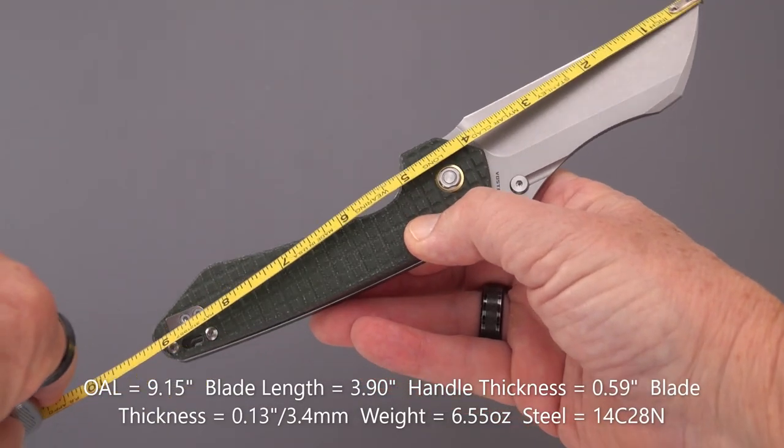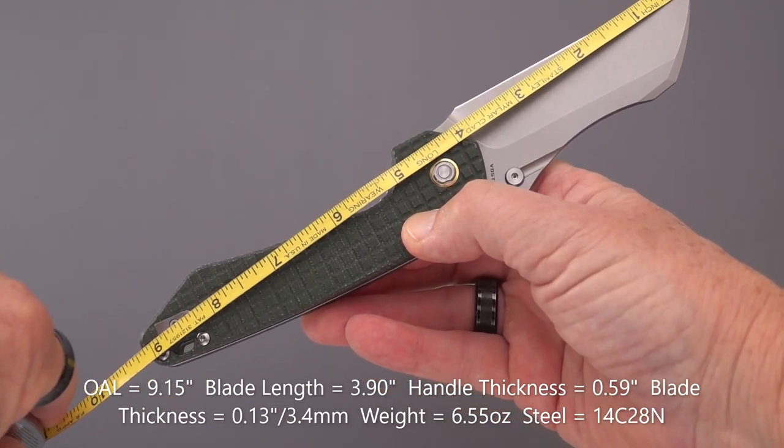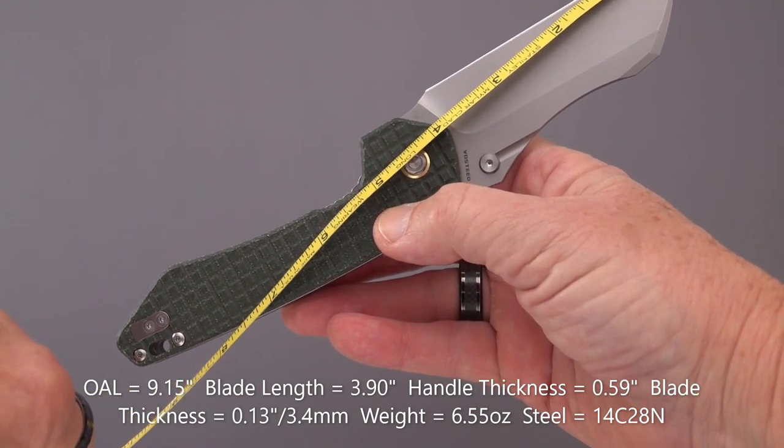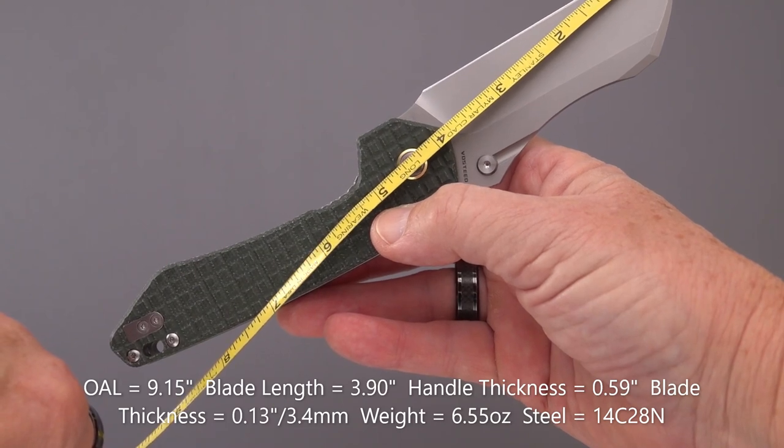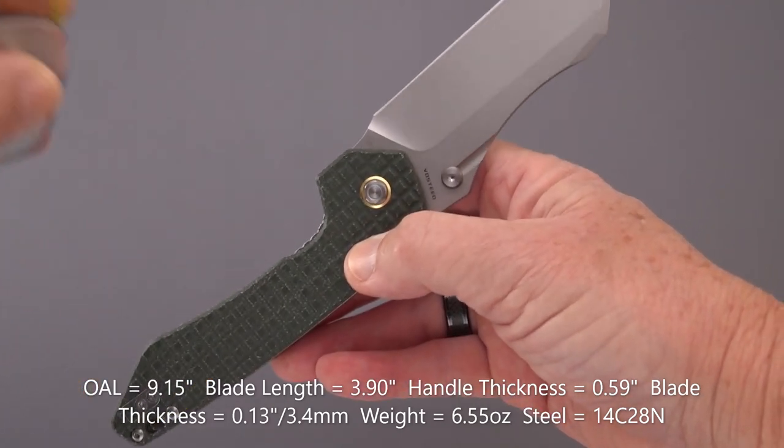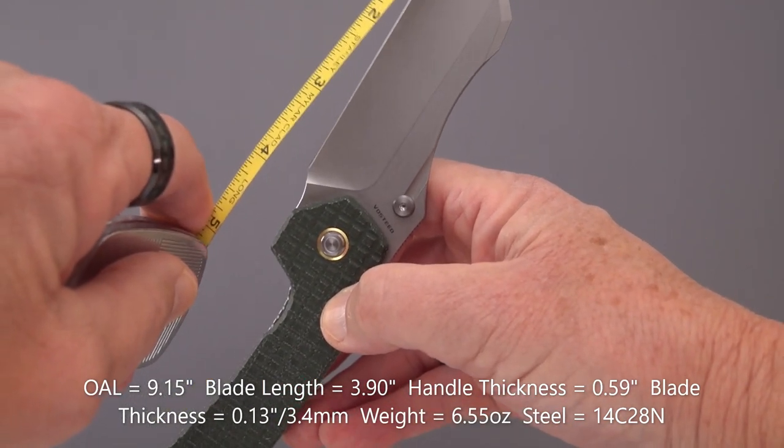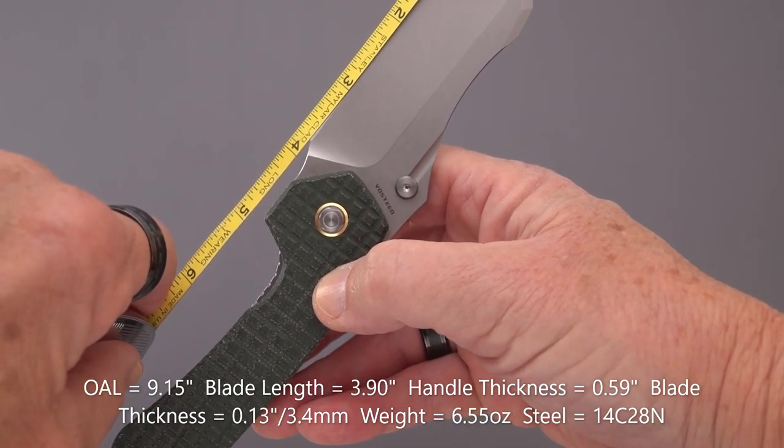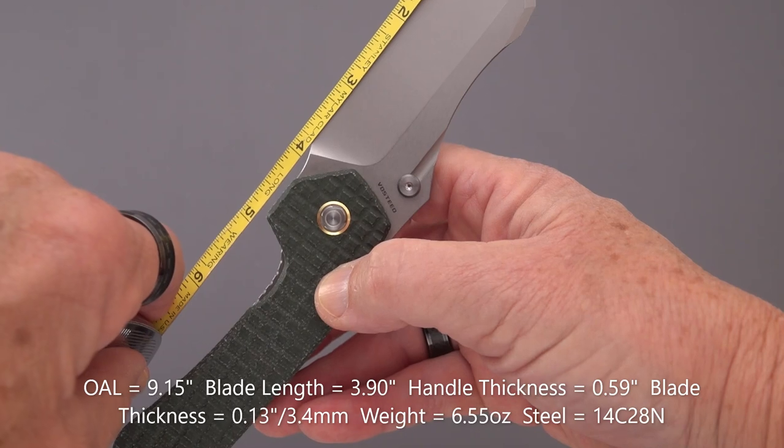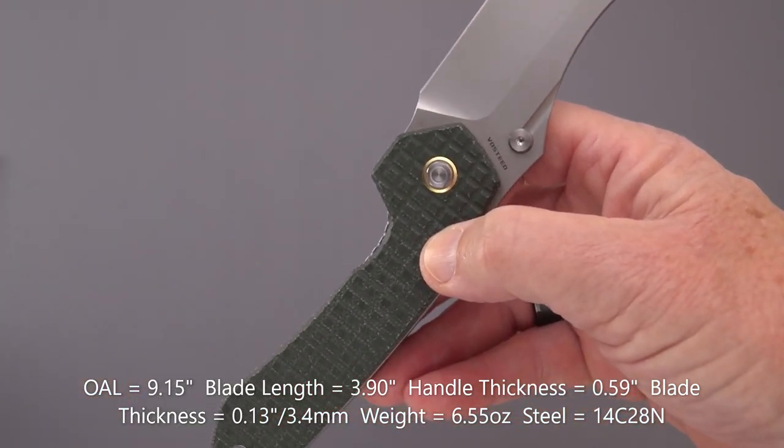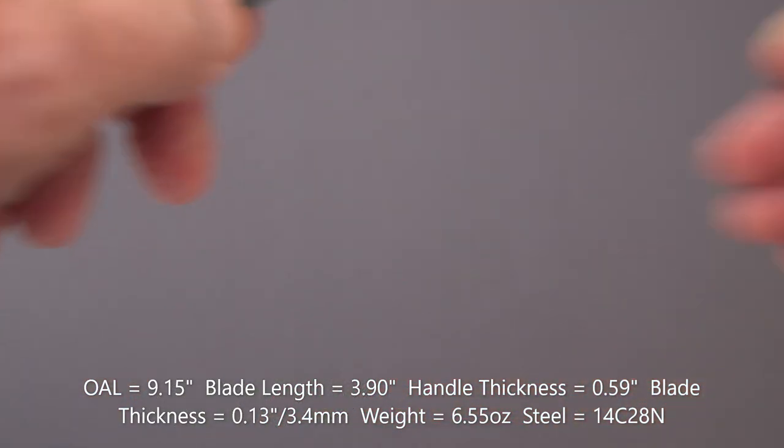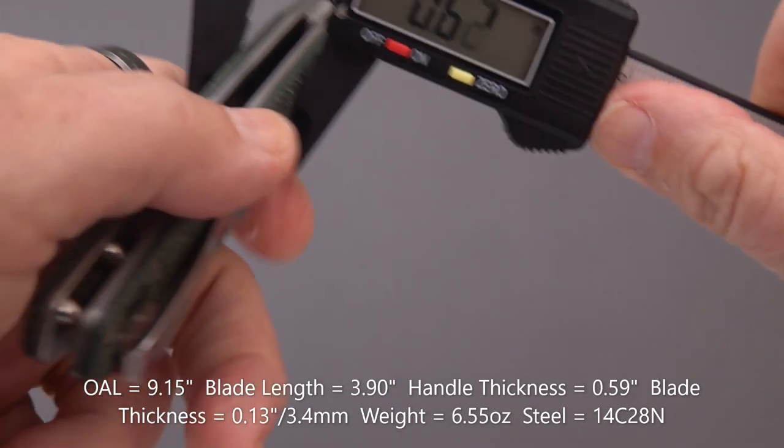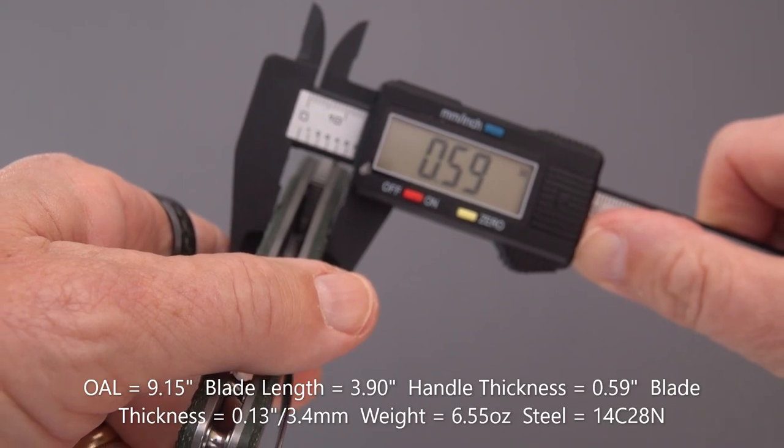But first, how about some measurements? So we can understand the full idea of how big this knife is. We're going to call it just shy of nine and a quarter inches overall, and it's like a 3.95 blade, with a cutting edge of like three and seven-eighths, somewhere around there.